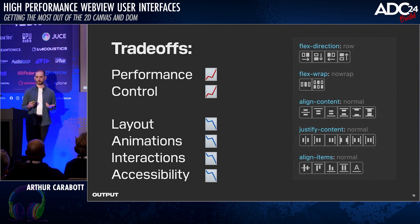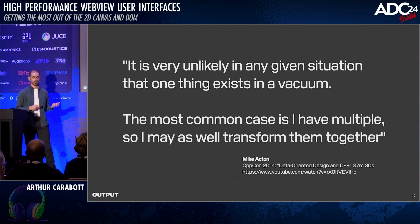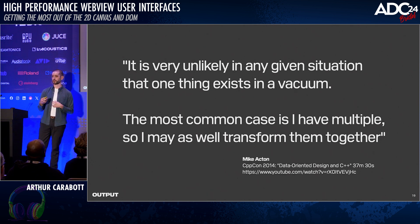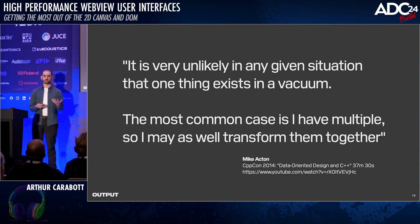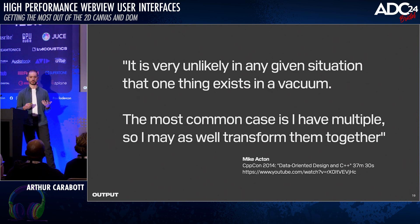Talking about rendering things quickly, I really like this quote from game developer Mike Acton: "It's very unlikely in any given situation that one thing exists in a vacuum. The most common case is I have multiple, so I may as well transform them together." In his talk, Mike is discussing transforming data updates to state and cache miss performance penalties, but this same principle applies to rendering.